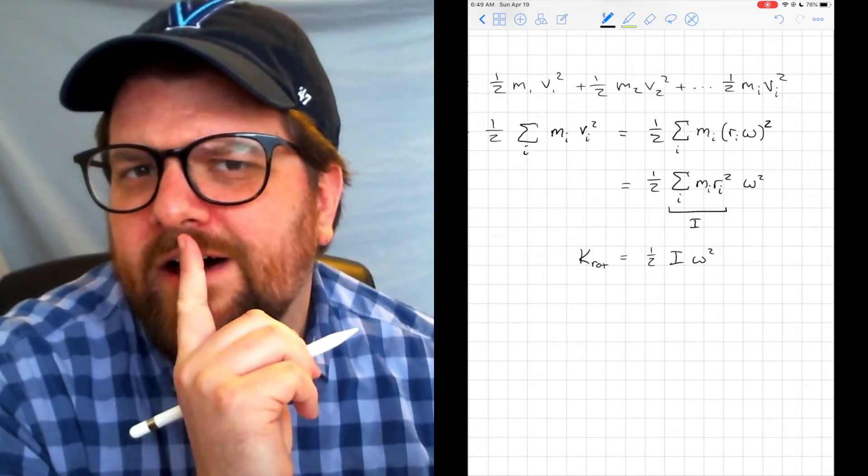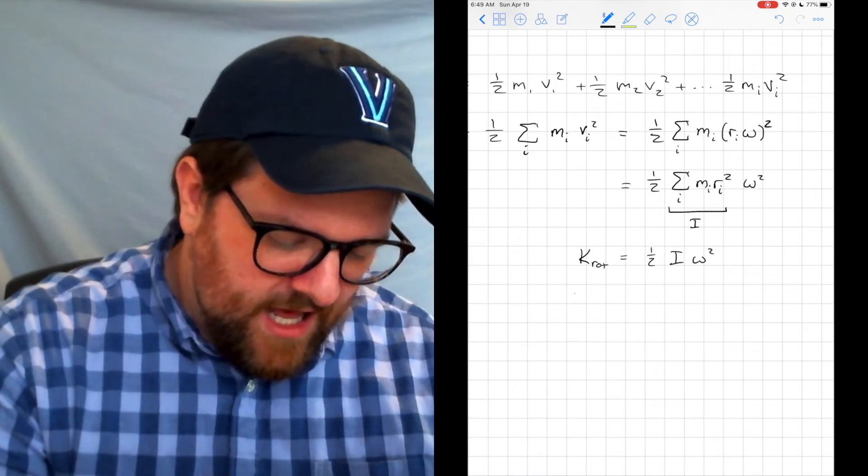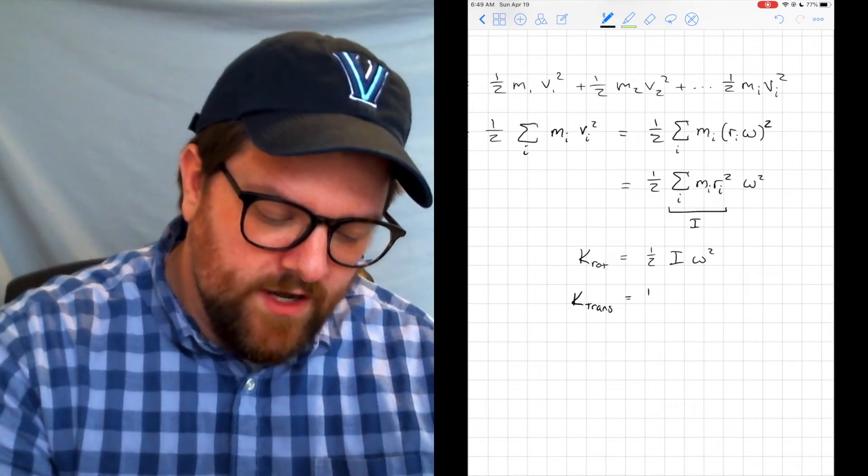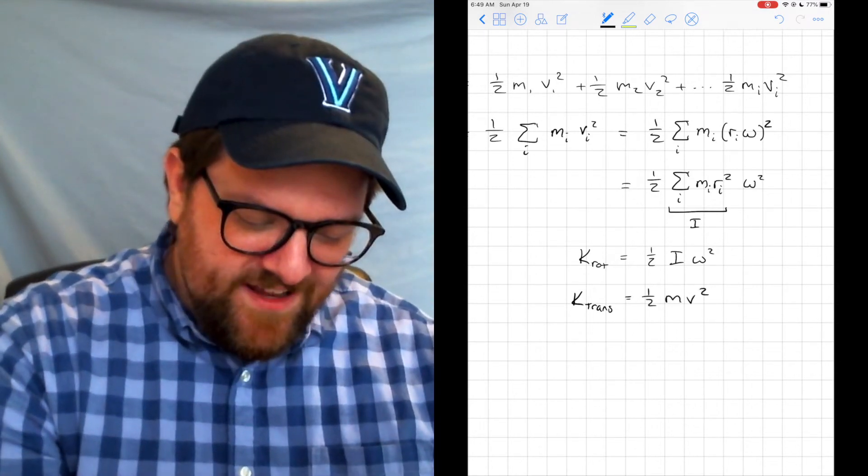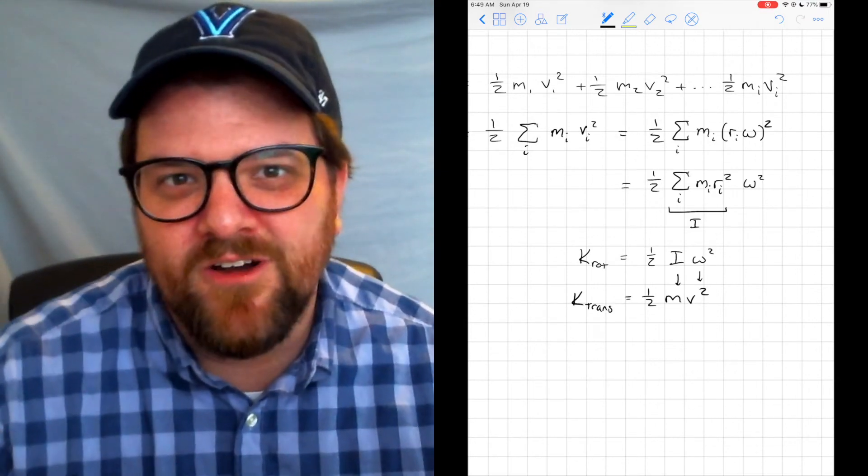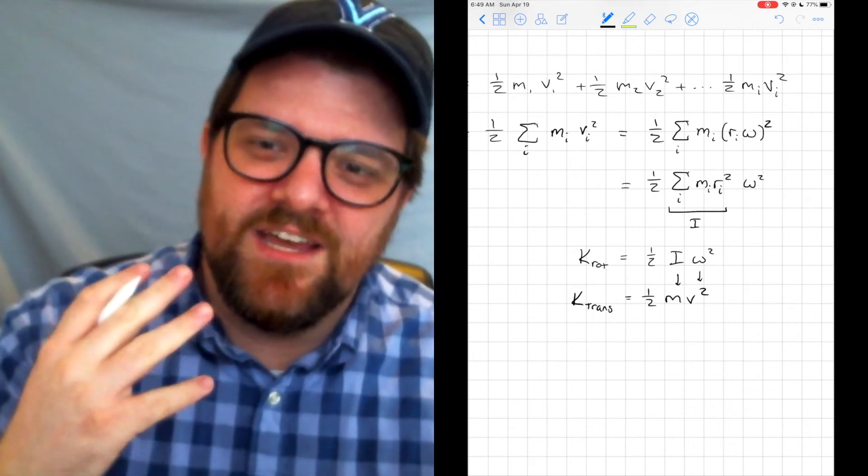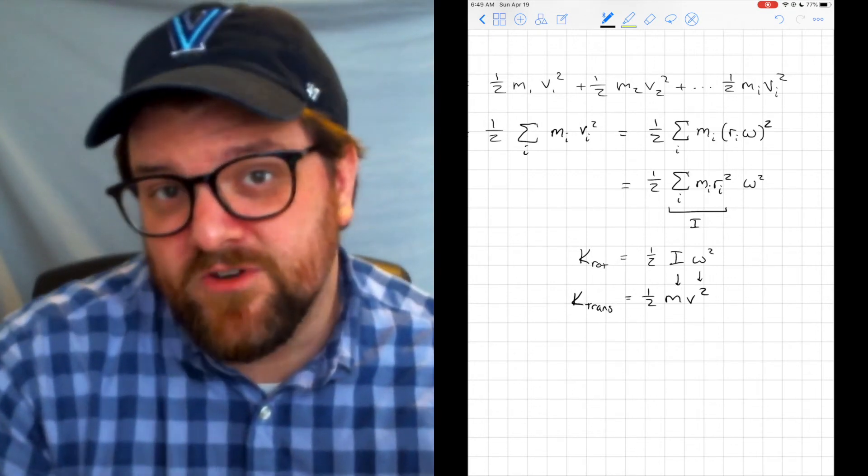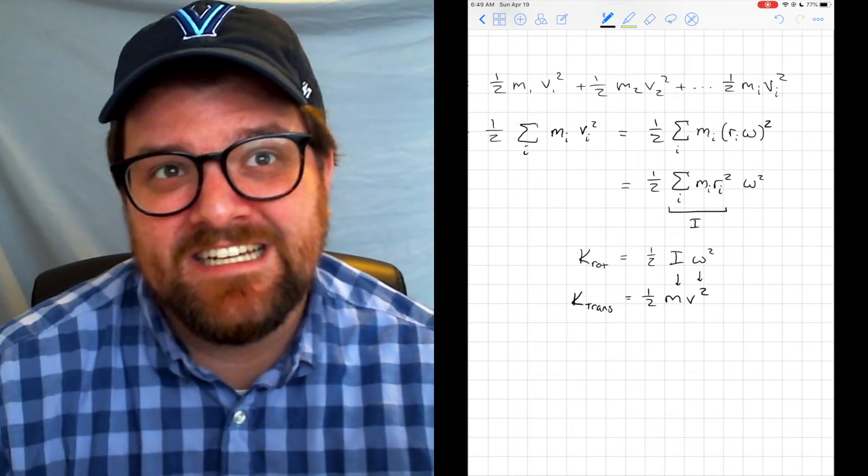Now, if we think about how that translates from angular quantities back to linear quantities, I have K_translational equal to 1/2 mv². And really, these are almost one to one, just swapping out for my angular quantities. Almost all the equations that we know and love can be swapped out—their linear quantities for angular quantities—and we retain the same basic kind of measurement.